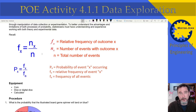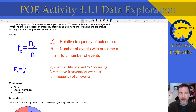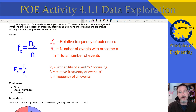You toss a coin 10 times. What is the frequency of heads? You just take the number of heads that you got in the 10 tosses and divide it by 10, because you did 10 tosses. Pretty simple.